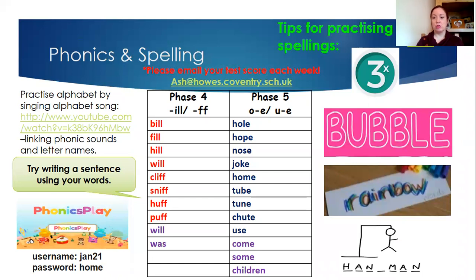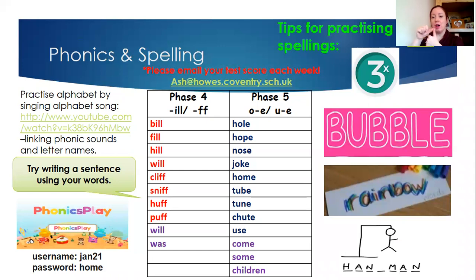So for phase four — these are children that usually work with Mrs White — we've got: b-ill, bill; f-ill, fill; h-ill, hill; w-ill, will; c-l-i-ff, cliff; s-n-i-ff, sniff; h-u-ff, huff; p-u-ff, puff. And then your tricky words are 'will' and 'was'.